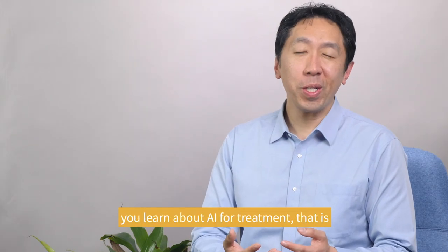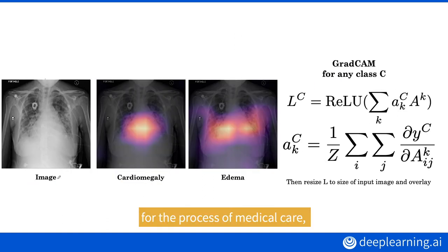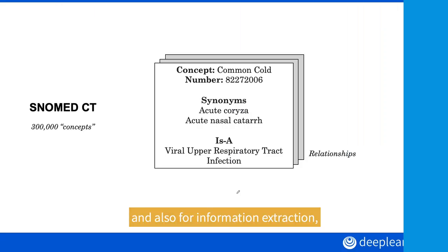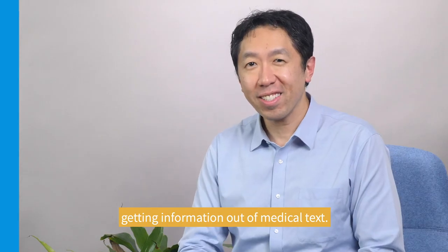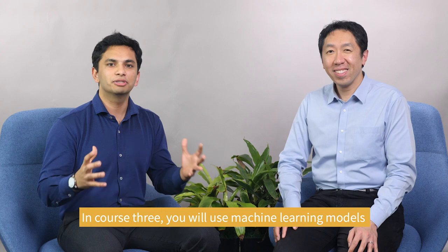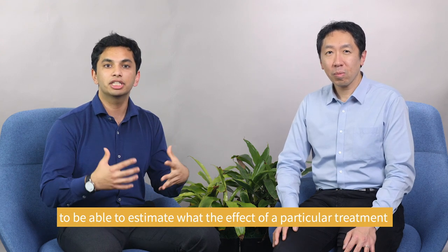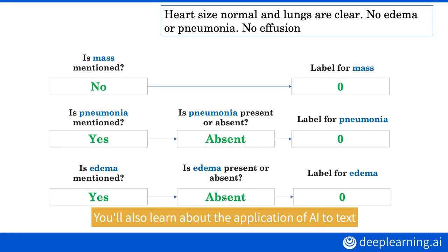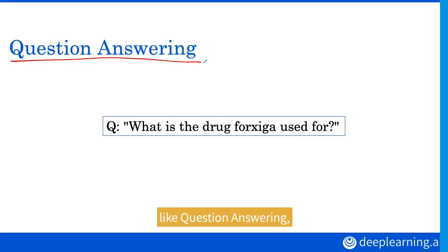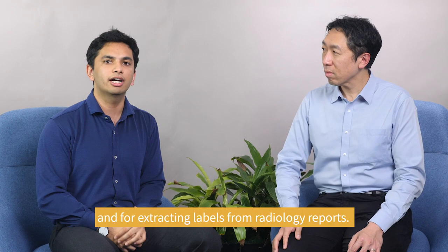Finally, in the third course you learn about AI for treatment — that is, for the process of medical care — and also for information extraction, getting information out of medical text. You will learn how to use machine learning models to estimate what the effect of a particular treatment would be on a patient. You'll also learn about AI applications to text for tasks like question answering and extracting labels from radiology reports.